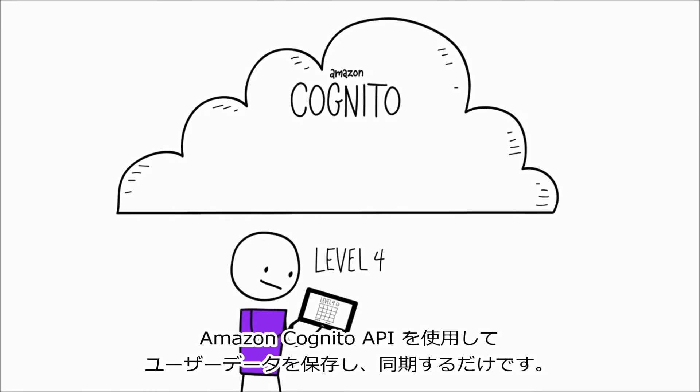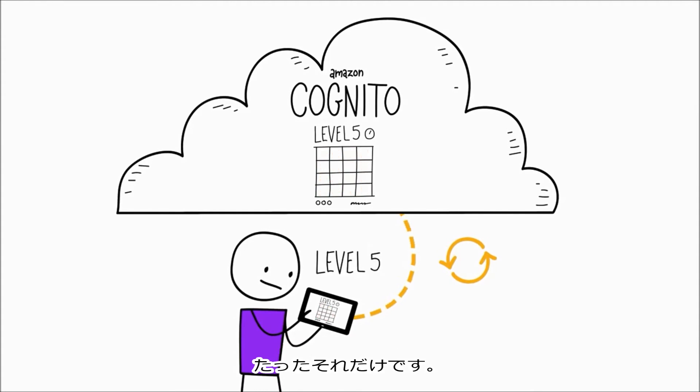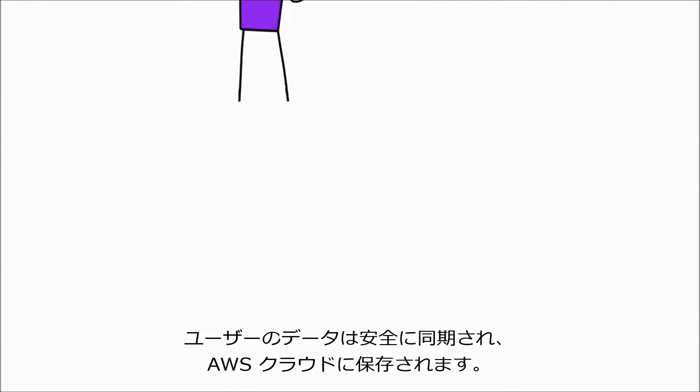You just save the user data using the Amazon Cognito API and sync it — and that's it. The user's data is securely synced and stored in the AWS cloud.